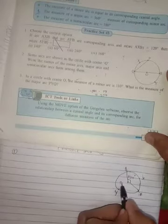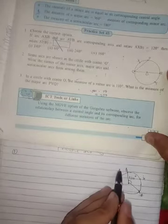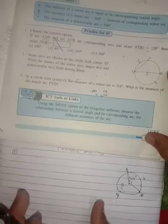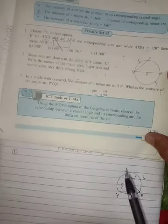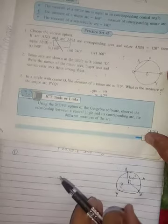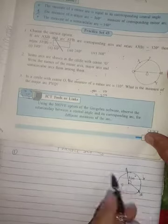Now to find the measurement angle of AYB, we already know that the total complete circle is 360 degrees. This is the minor arc and this is the major arc.